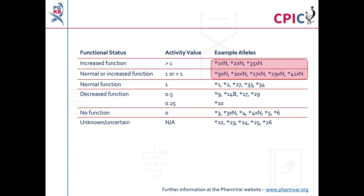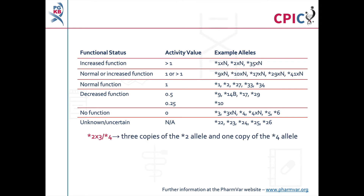It is important to note that patients can carry multiple copies of CYP2D6. Reports in the scientific literature have described cases where up to 13 copies of CYP2D6 were present in a patient's genome. Alleles present in multiple copies are given the suffix XN, where N is the number of copies present. For example, a patient with the genotype star 2 X3 star 4 has three copies of the star 2 allele and one copy of the star 4 allele. The activity score of alleles present in multiple copies is calculated by multiplying the activity score for the allele by the number of copies present.